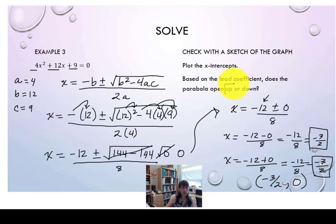We had decided that our lead coefficient is positive 4, so that means the parabola is opening up. If we make a sketch of this parabola, first plot the x-intercept. We only have one x-intercept, so if I call this negative 3 halves, then I'm using the lead coefficient to help me know which direction this parabola opens.